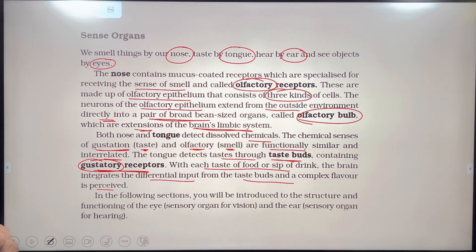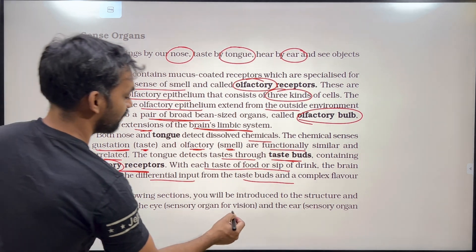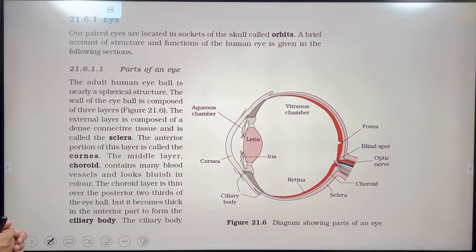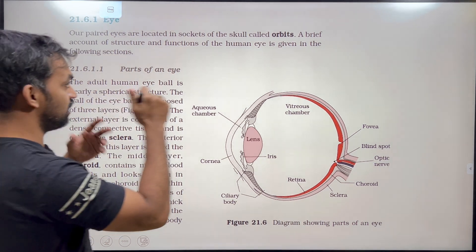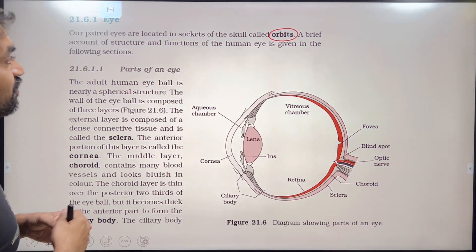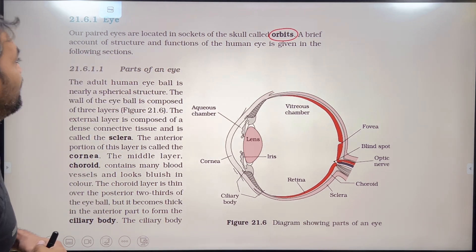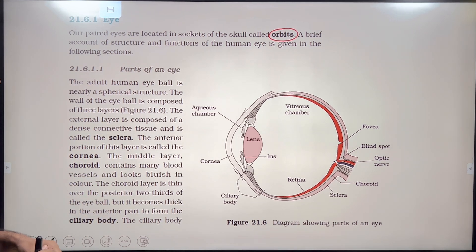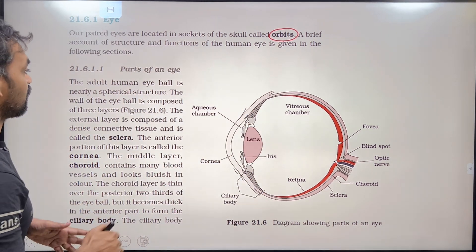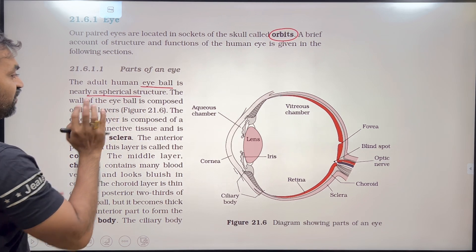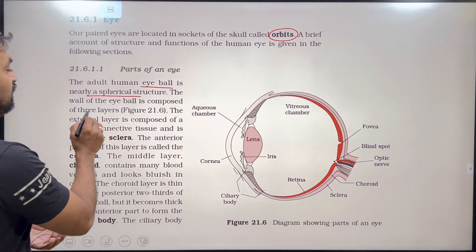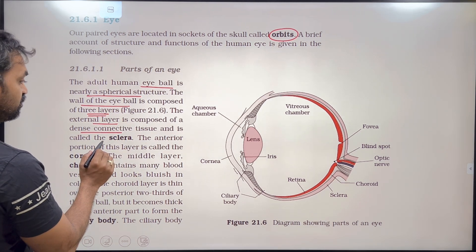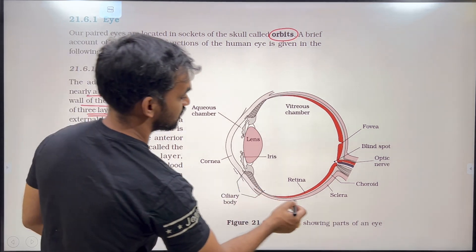You will be introduced to the structure and functioning of the eye — sensory organ for vision — and the ear — sensory organ for hearing. The eye is located in sockets arranged in the orbits of the skull. The adult human eyeball is a nearly spherical structure, and the wall of the eyeball is composed of three layers.